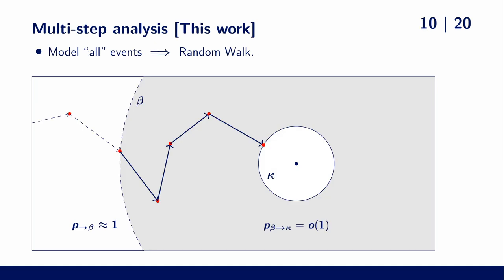When we phrase the latter lower bound like this, it seems clear what we need to do. For a tight analysis, we have to model all possible events, which gives us a model that is like a random walk.